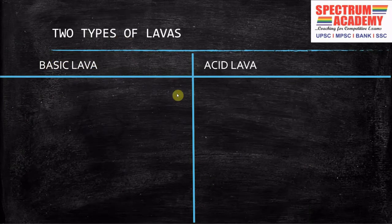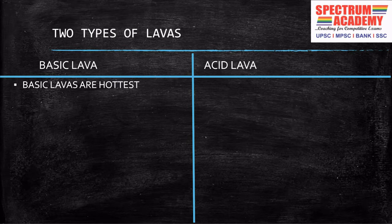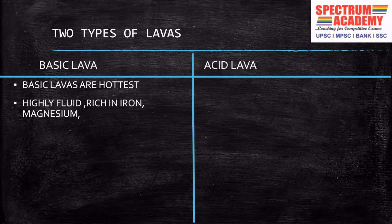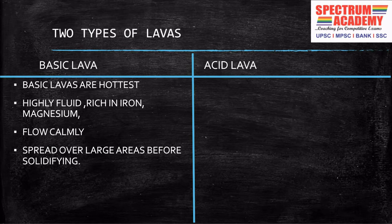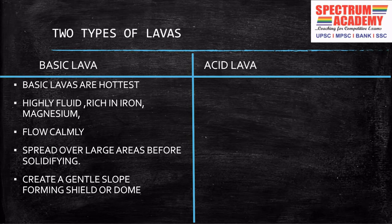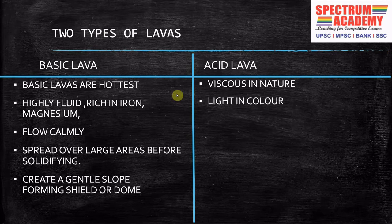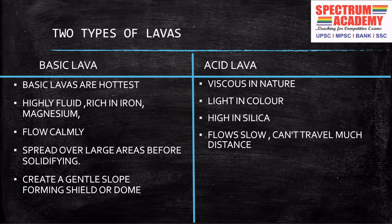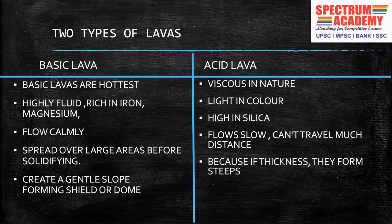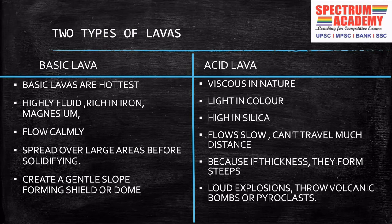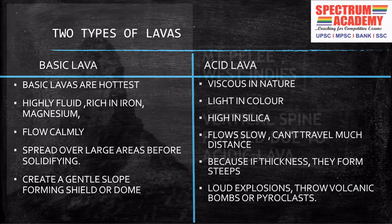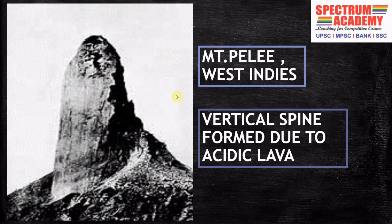There are two types of lavas: basic lava and acid lava. Basic lavas are the hottest; they are highly fluid, rich in iron and magnesium, and flow very calmly. Because they are basic, they spread over large areas before solidifying, creating a gentle slope forming a shield or a dome. Acid lavas are viscous, light in color, and high in silica. They flow slowly and can't travel much distance before solidifying. Due to their thickness they form steep slopes, create loud explosions, and throw volcanic bombs or pyroclasts. Some acidic volcanoes have very thick lava which creates a spine at the crater as it doesn't erode.